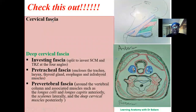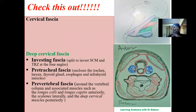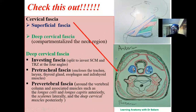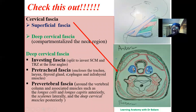The cervical fascia is the fascia around the cervical region, divided into two major classes: superficial fascia and deep cervical fascia. The deep cervical fascia presents a more interesting presentation, further subdivided into three: the investing fascia, the pre-tracheal fascia, and the pre-vertebral fascia.